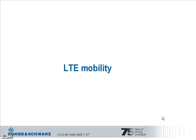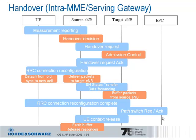In this section we will have a closer look at the mobility procedures defined inside the LTE system. This means how the subscriber moves from one cell to another. This slide illustrates in a very simplified way the procedures for a handover from a UE between two base stations, a source eNodeB or base station and a target eNodeB or base station. Also the X2 interface between the two base stations is involved in this case.